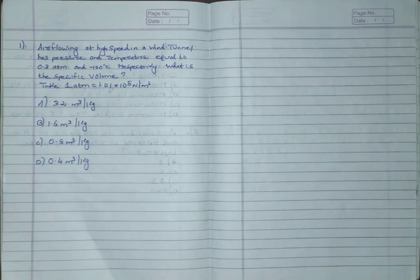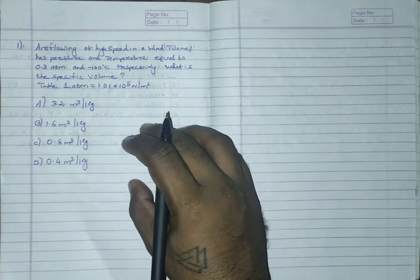Hello everyone, welcome back to your hub. In this video we will see the previous year questions of Air Safety Officer. These questions were asked in the Air Safety Officer examination of 2018. We will start this video series. The air flowing at high speed in a wind tunnel has a pressure and temperature equal to 0.3 atm and minus 100 degrees Celsius respectively.